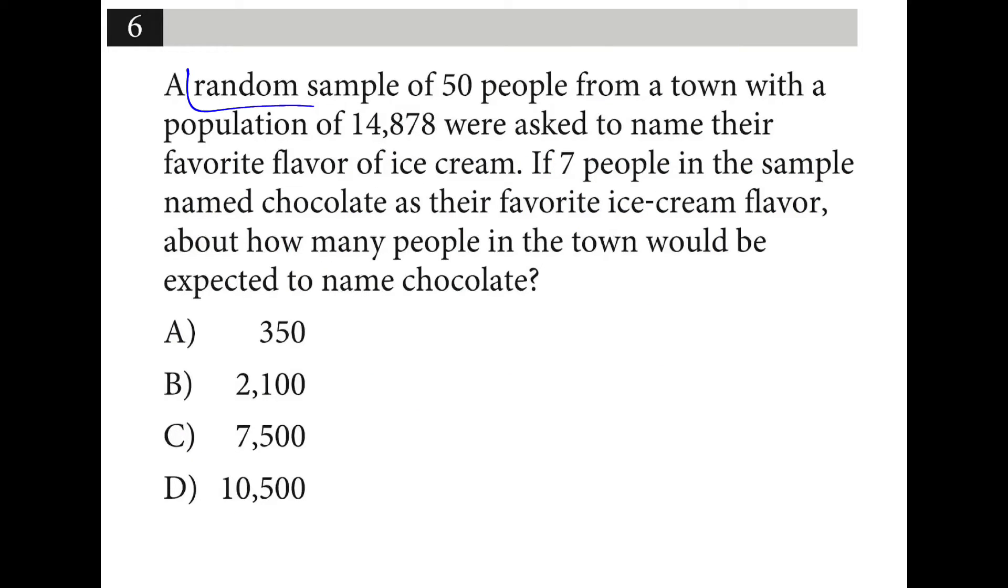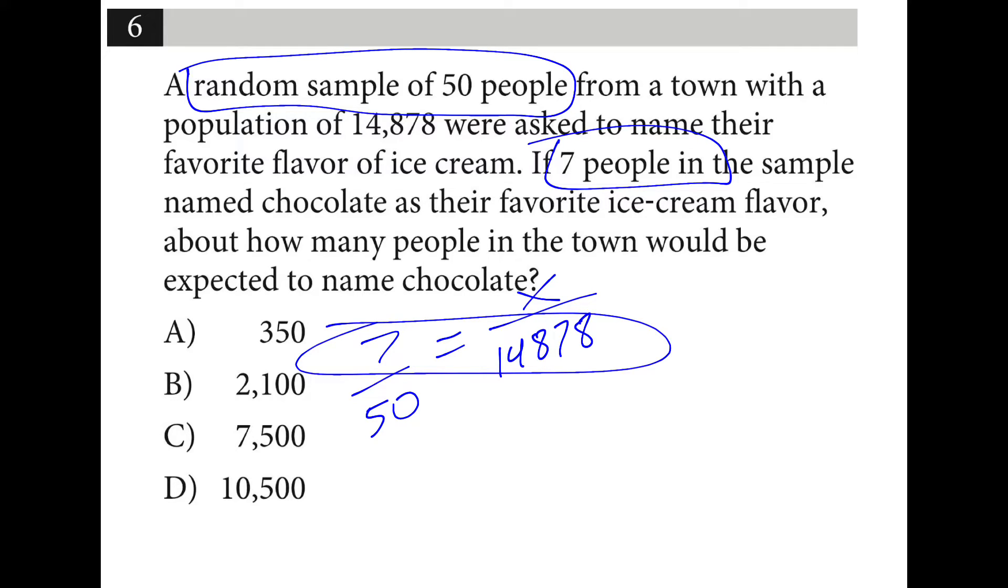We have a random sample of 50 people, and 7 said chocolate was their favorite ice cream flavor, 7 out of those 50. If we multiply that until we account for the entire population of the town, how many like chocolate? We can cross multiply and divide by 50. You get 2,082.92, which is closest to 2,100.